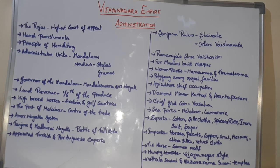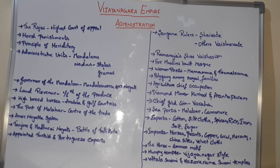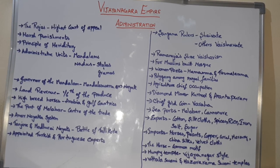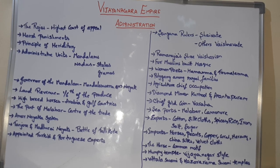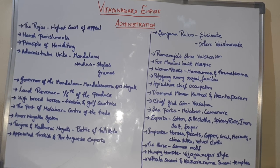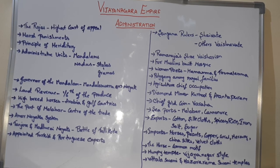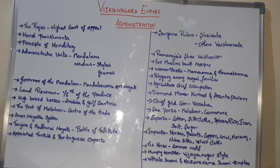Imports were very costly: horses, pearls, copper, coral, mercury, China silk, and velvet cloth were the main imports. Horses were imported from Arabia through the Arabian Sea. The shipbuilding art was also developed during the Vijayanagara period.